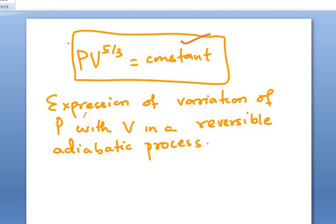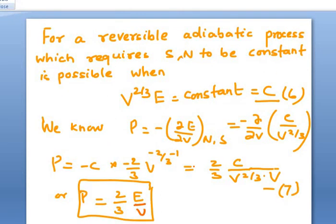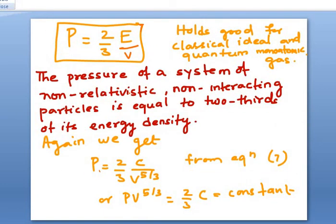This is a very important expression: PV^(5/3) = constant. And again, this expression that pressure of a non-relativistic, non-interacting particle is equal to two-thirds of its energy density, 2/3 E/V, which is the energy density. So that is it. Thank you.